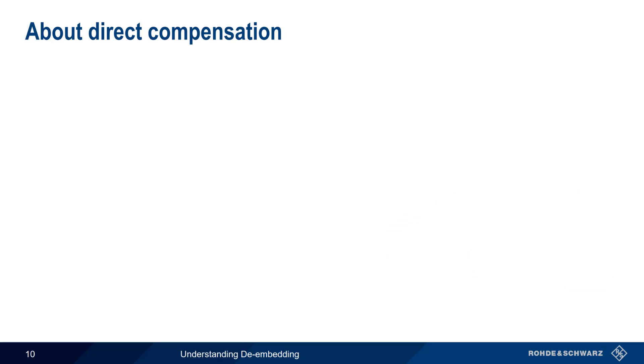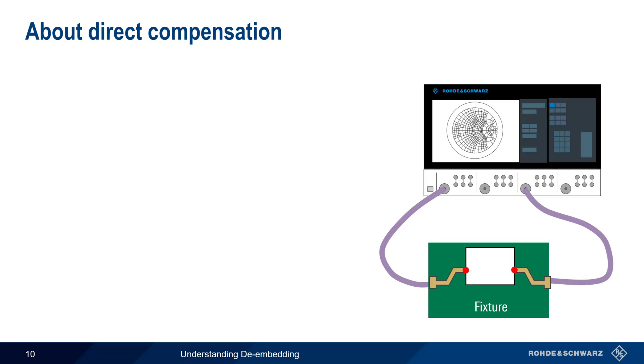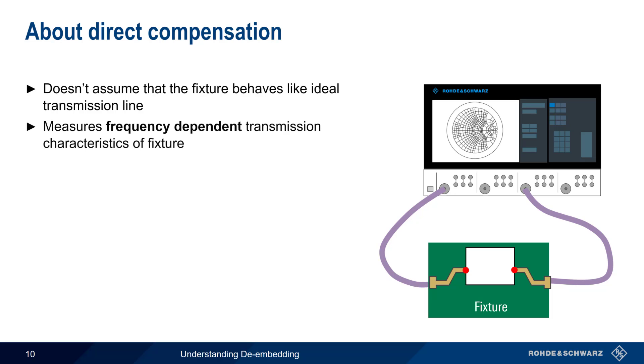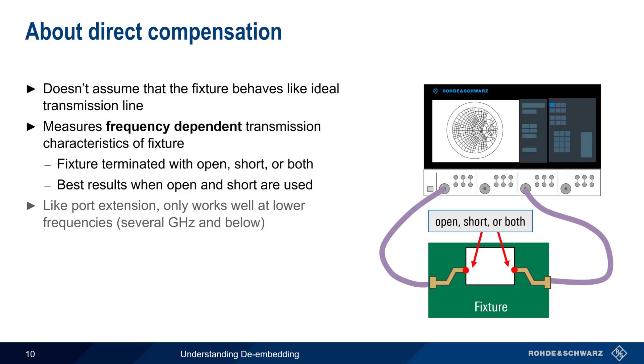The measurement setup for the direct compensation approach is similar to port extension, but unlike port extension, the direct compensation methodology doesn't assume that the fixture behaves like an ideal transmission line. Therefore, direct compensation measures the frequency-dependent transmission characteristics of the fixture, and then uses this information to compensate for the fixture. The dot ends of the fixture are terminated with an open, short, or both, and best results are usually obtained when an open and a short are used. Note that, like port extension, direct compensation only works well at lower frequencies, that is, below a few gigahertz or so.